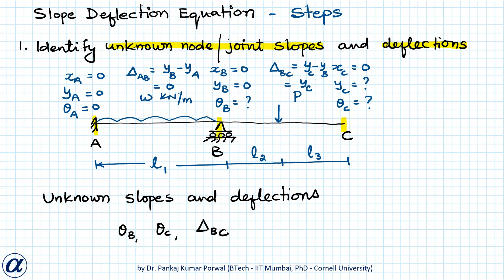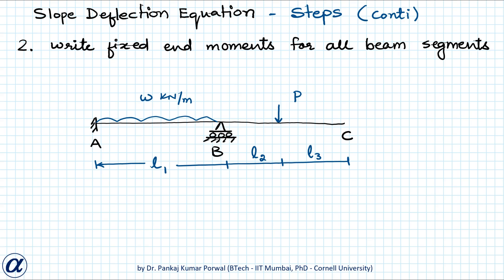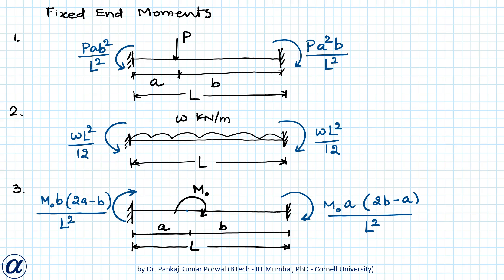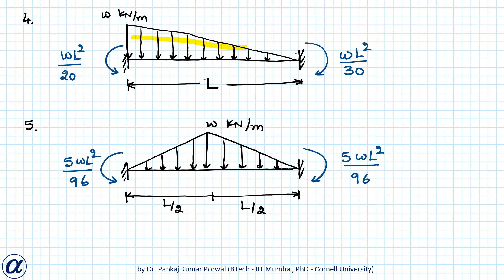The next step is to find fixed end moments for all beam segments. Irrespective of the actual boundary or support conditions, we assume all ends to be fixed. For each segment there are two fixed end moments: at the left end (e.g., FEM_AB) and at the right end (e.g., FEM_BA). Commonly used fixed end moment values are tabulated for point loads, UDL, point moments, triangular loads with maximum at end, and triangular loads with maximum at midspan.